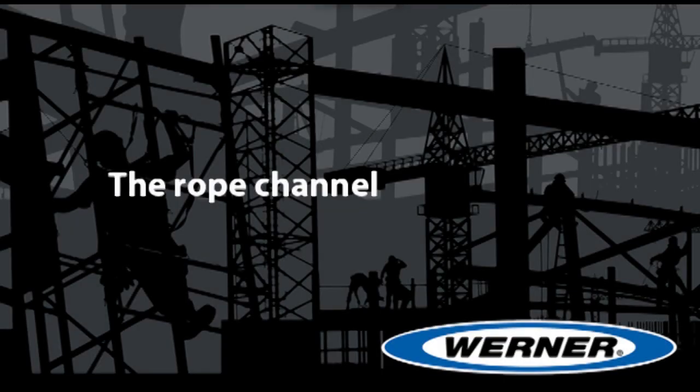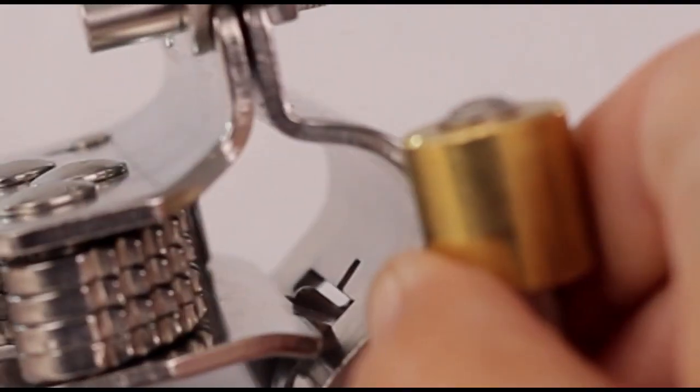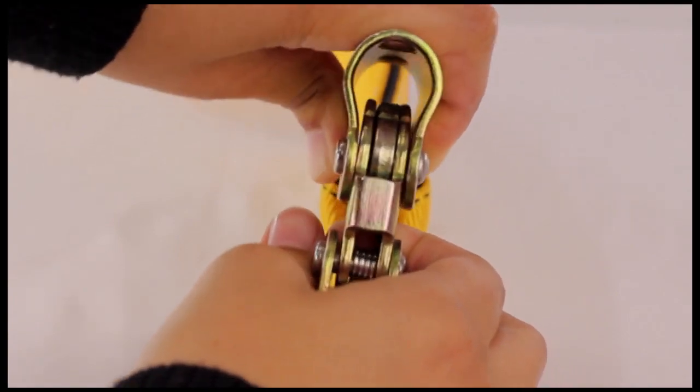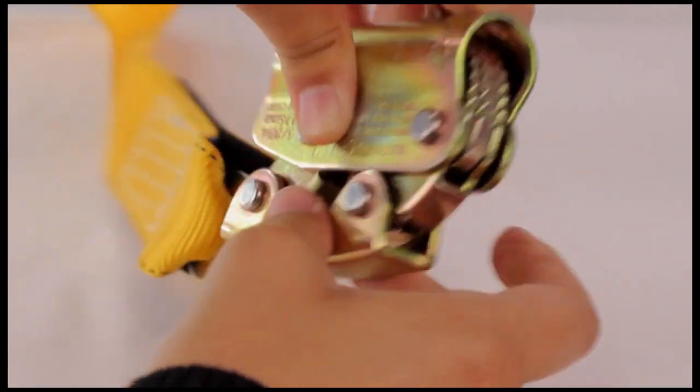The Rope Channel. Inspect the rope channel for wear. The channel should be smooth. If any depressions or dips are worn into the channel, remove it from service.